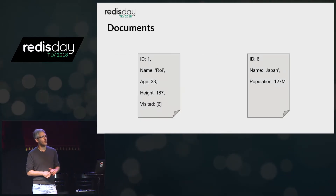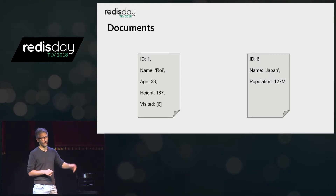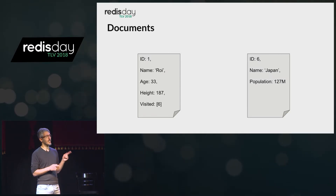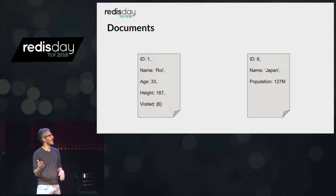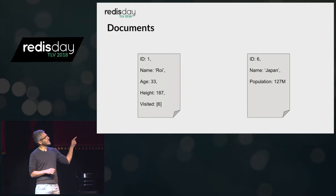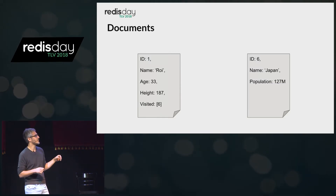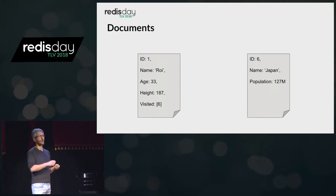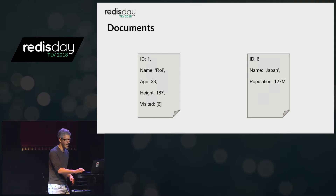Similarly, MongoDB is a document store, so we can apply the same concept using documents instead of tables. Each document represents a single entity. We can have a document representing a person and another representing Japan. The last property on the person document is an array called 'visited,' which tells us there is a relation of type visit between document ID 1 and document ID 6. This is how connections and edges are formed.